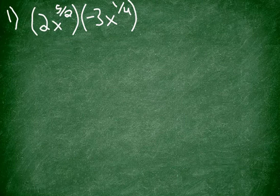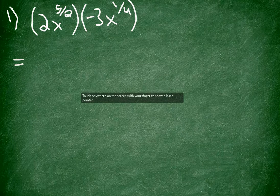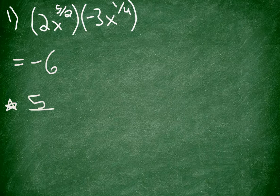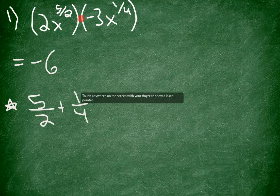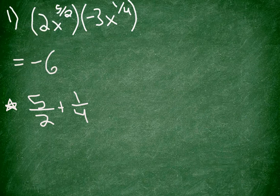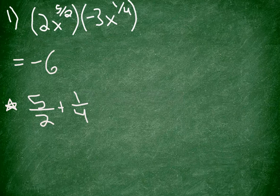That's one of the key laws of exponents, whether it's a fraction — in other words, a rational number — or an integer. So to get started, we can first right away multiply two and negative three. We know that that gives us negative six. And then if I do a little side problem here and just make a note of what is five halves plus one fourth — again, we're adding those exponents because I'm multiplying like bases. They both are an x.